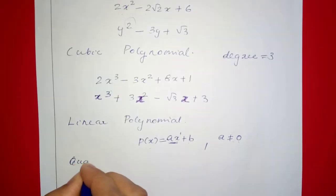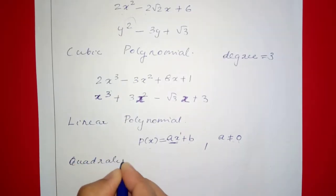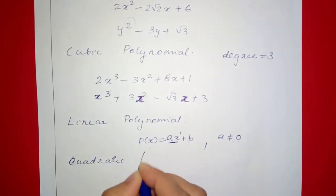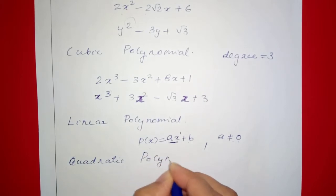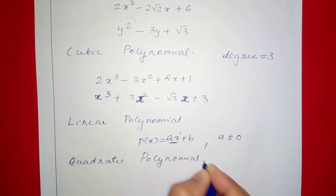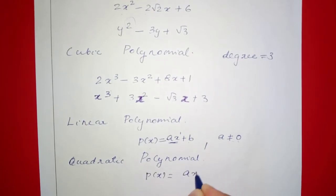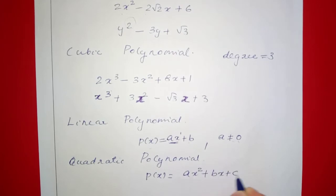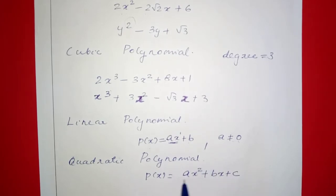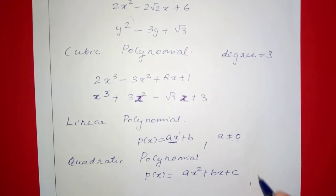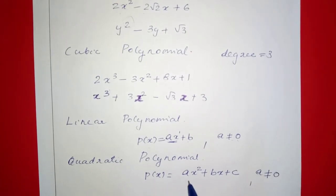The general form of the quadratic polynomial is ax squared plus bx plus c, with the condition that a is not equal to zero. Here a, b, and c are any real numbers.